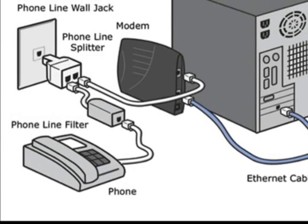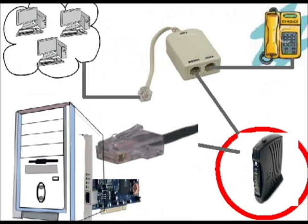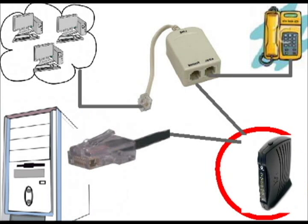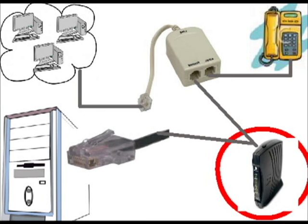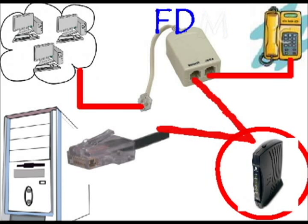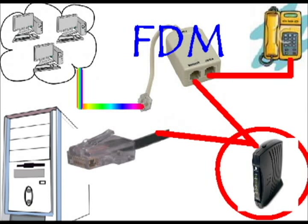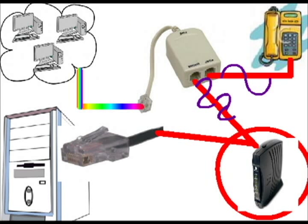A better technology, DSL, came up which used the same medium, but the essential component was an externally connected transceiver commonly known as a DSL modem. Both internet and telephone could work simultaneously using a splitter. A connection was established with the ISP using the splitter, and the telephone network and modem used different frequencies — this was done using frequency division multiplexing.